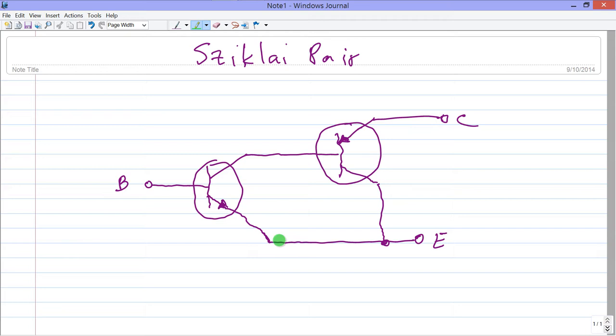We connect the emitter of this NPN transistor to the collector of the PNP, and that forms the emitter for the entire device. Then the emitter of the PNP forms the collector for the entire device.